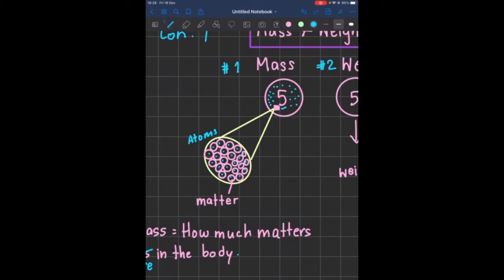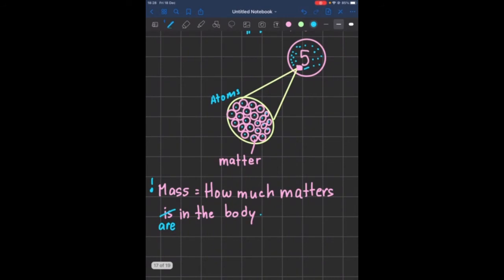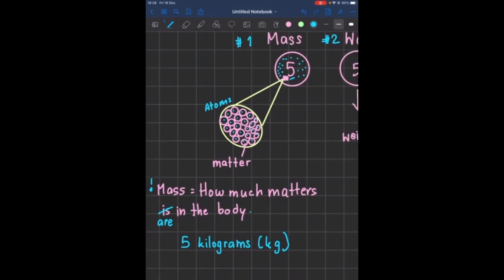Here I gave the number five. So if I were to answer the question, what is the mass of this ball? This ball has a mass of five kilograms. Very easy, very understandable. So that was mass.